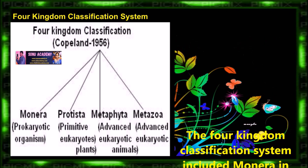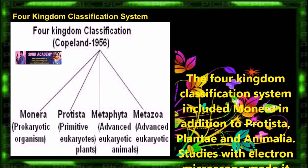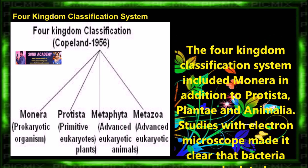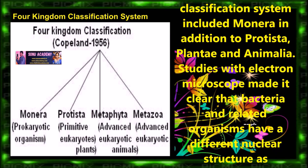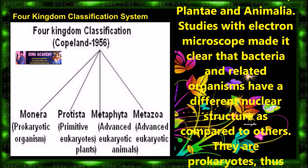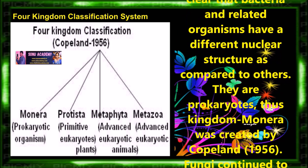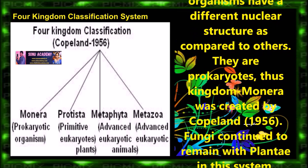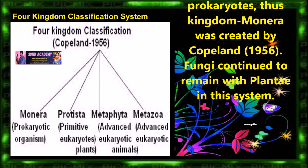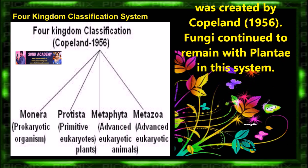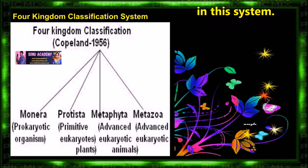After some changes, the four kingdom classification system was introduced. It included Monera in addition to Protista, Plantae and Animalia. Studies with the electron microscope made it clear that bacteria and related organisms have a different nuclear structure compared to others — they are prokaryotes. The kingdom Monera was created by Copeland in 1956. Fungi continued to remain with Plantae in this system.